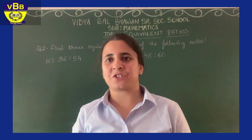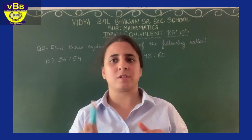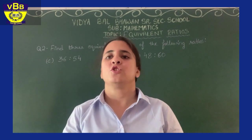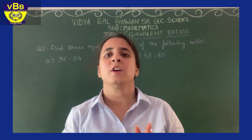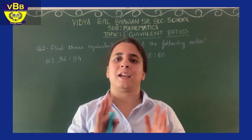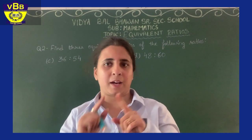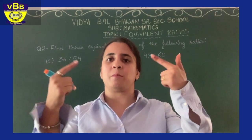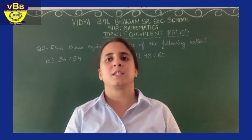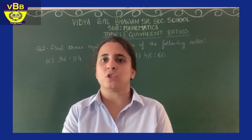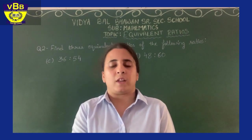The next topic is equivalent ratios. You already know ratios can be written as fractions, and the whole concept is similar. To find equivalent ratios, recall what equivalent fractions are: we reduce a fraction to its lowest terms, and if the values are the same the fractions are equivalent. We will follow the same method for finding equivalent ratios.